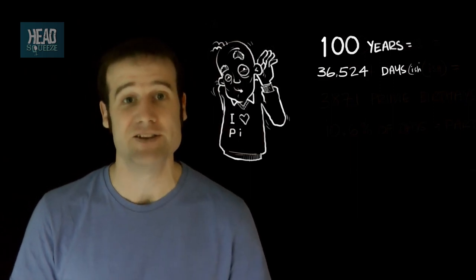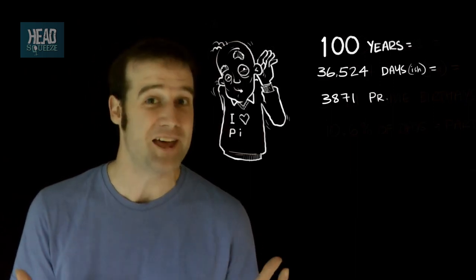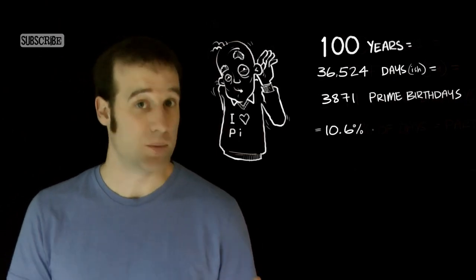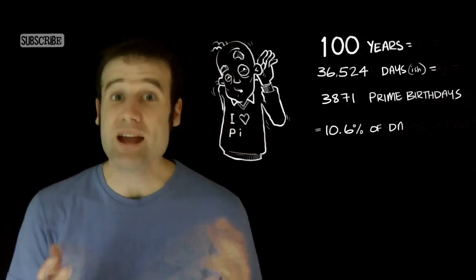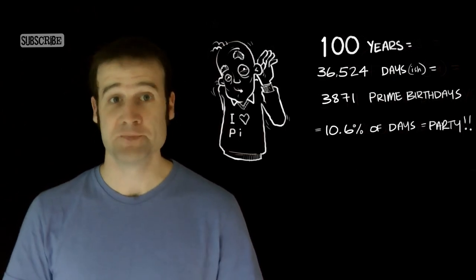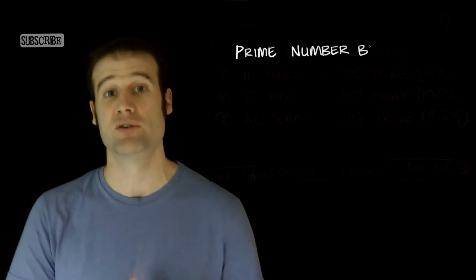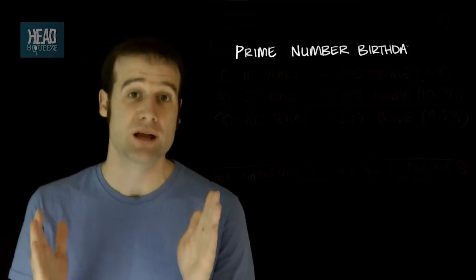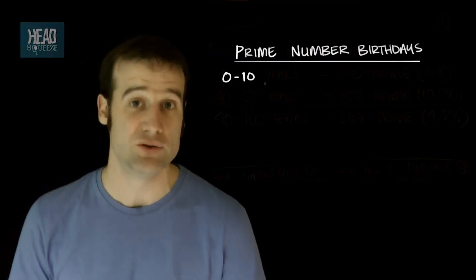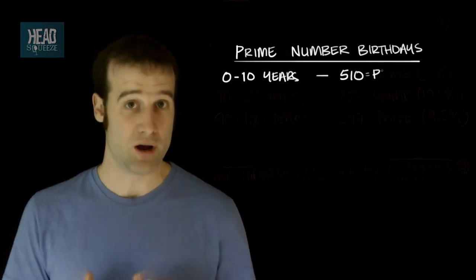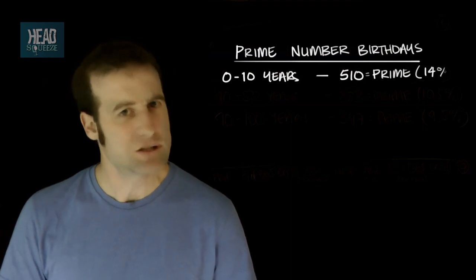That's 10.6% of all days being your prime birthday. As you get older, your prime-numbered birthdays will become less common, just because as numbers get bigger, fewer of them are prime numbers. To start with, the going is pretty good. For the first 10 years of your existence, from 0 to 10, which covers about 3,652 days, of those, 510 of them will be prime. That's 14%. It's not bad.